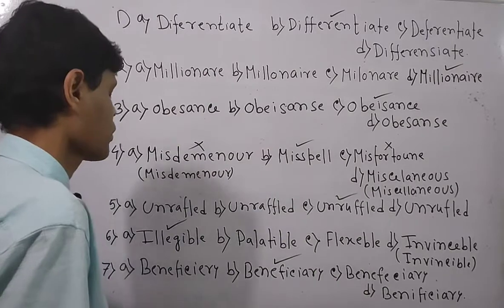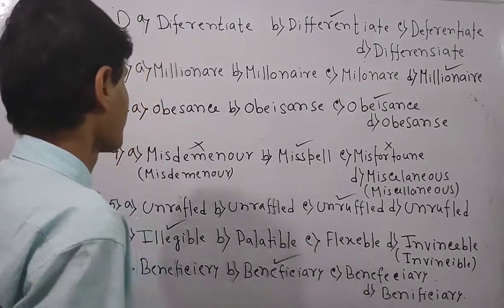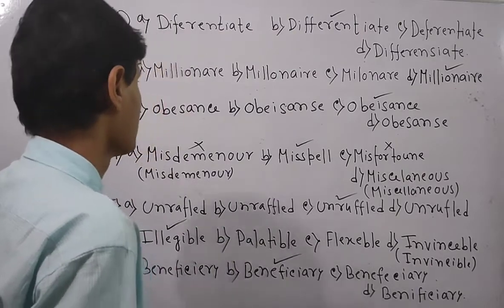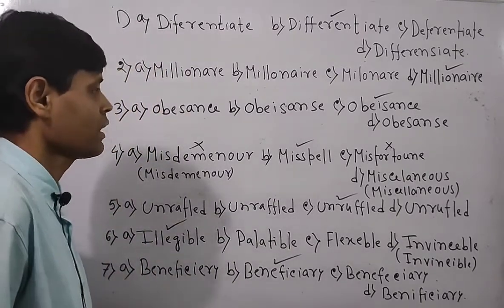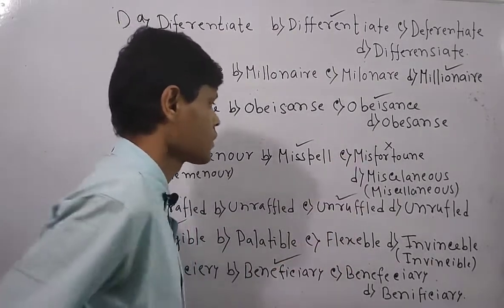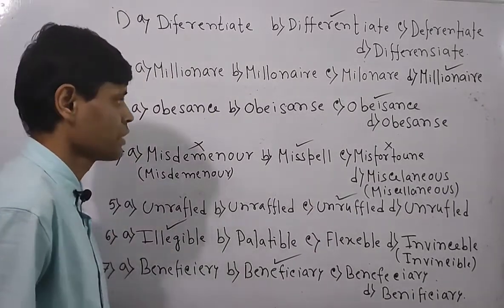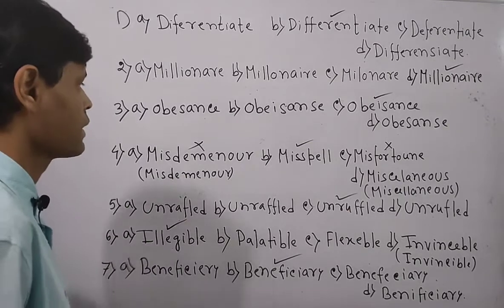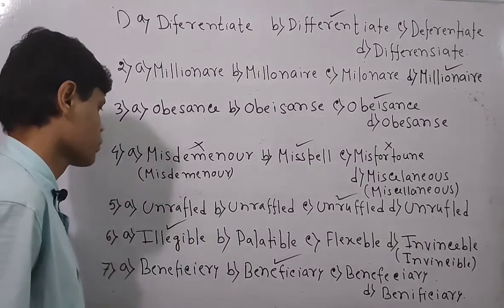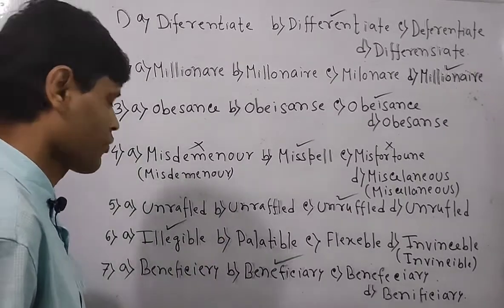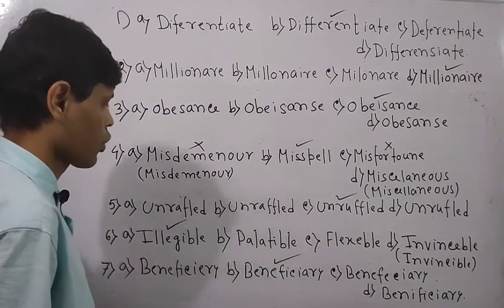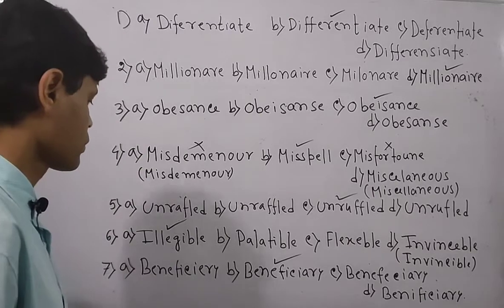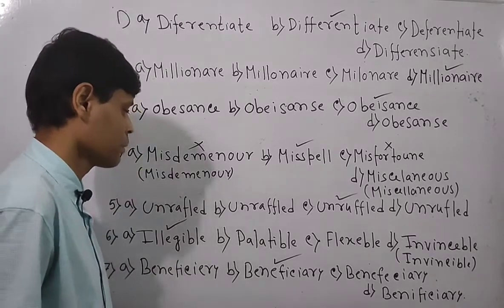Now let's look over all the answers. The first answer goes for option B — 'differentiate.' Second goes for option D — 'millionaire.' Third goes for option C — 'obeisance.' Fourth goes for option B — the correctly spelled word. Fifth goes for option C — 'unruffled.' Sixth goes for option A — 'illegible.' Seventh goes for option B — 'beneficiary.'